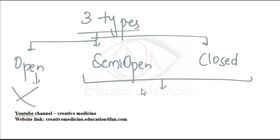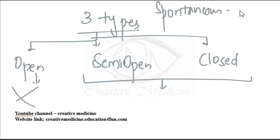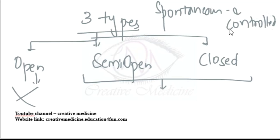We have two types of ventilation: spontaneous ventilation and controlled ventilation. In spontaneous ventilation, the patient can take the amount of oxygen by himself and can exert some pressure. In controlled ventilation, the patient cannot exert any pressure, and the ventilator or anesthesia machine gives a controlled amount of air or pressure.